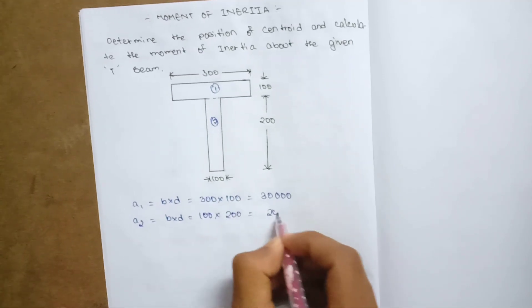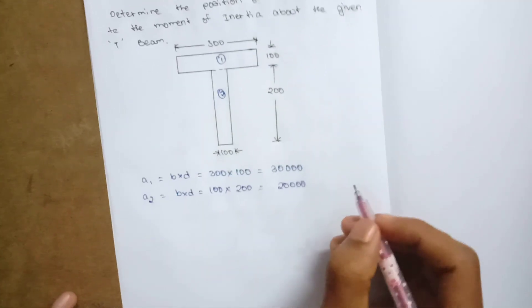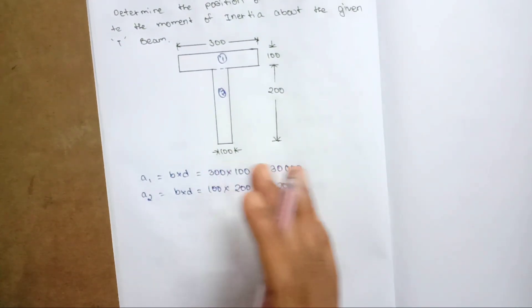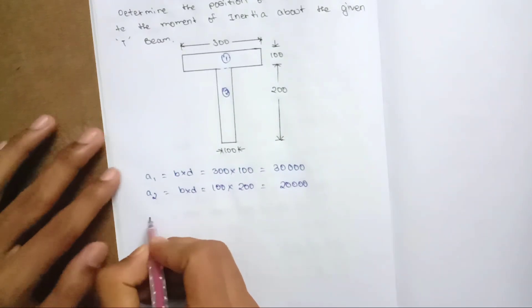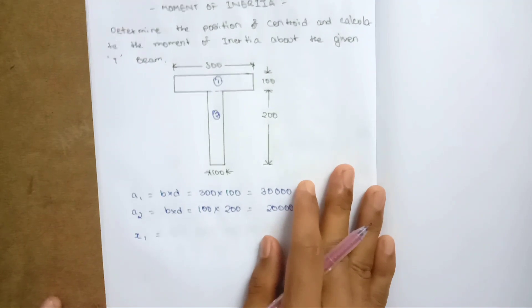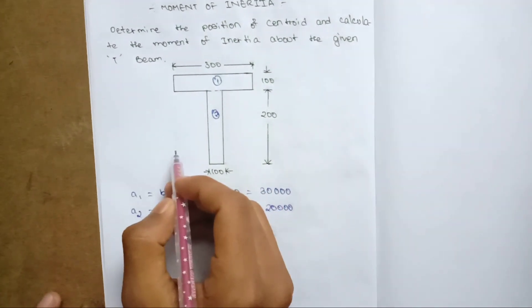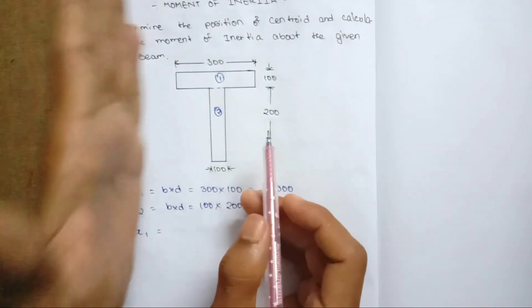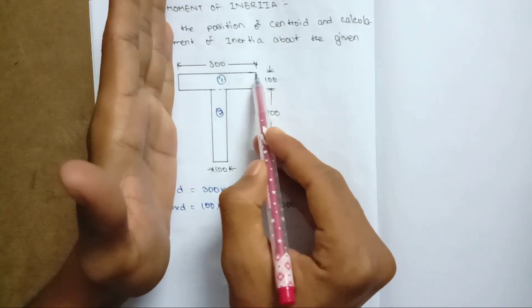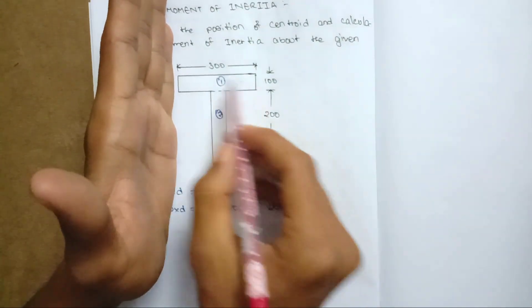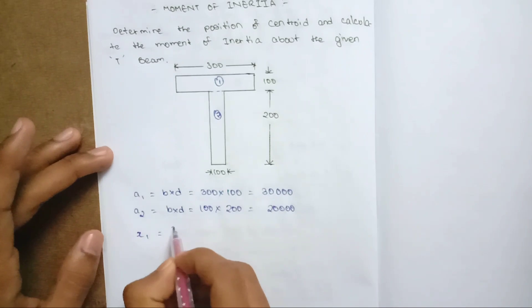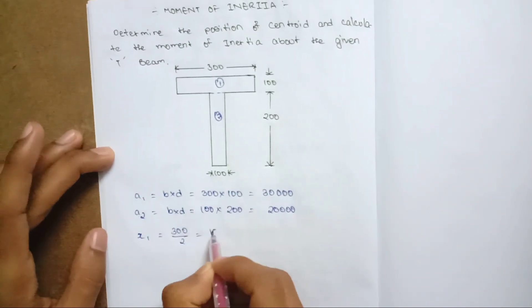We are going to find x1 and x2, y1 and y2 — the center coordinates for each rectangle. We calculate with reference to the y-axis. You can see this point. x1 equals 300 divided by 2, which is 150.